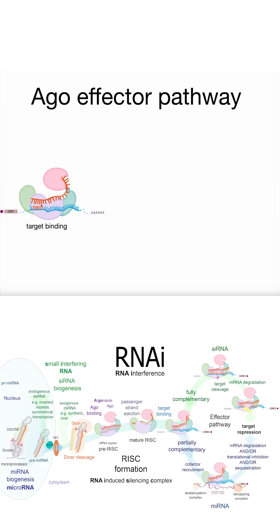That seed sequence is then going to go and bind to messenger RNAs that contain the complementary sequence, and Argonaute is now going to reduce the amount of protein that gets made from those messenger RNAs. How it does this depends on the amount of complementarity between that messenger RNA and the guide.